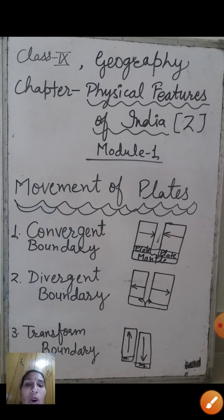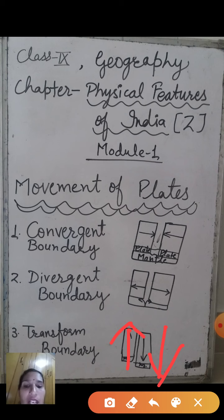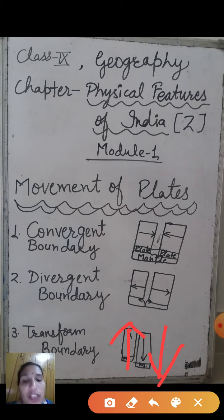The third kind of movement is the transform movement, where two plates don't affect each other but pass alongside each other. The plates form transform boundaries. This is called a neutral movement because there is no formation of new crust and no destruction of existing crust — it is a neutral kind of plate movement.